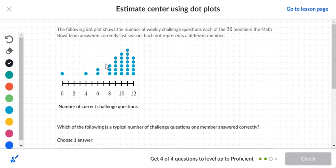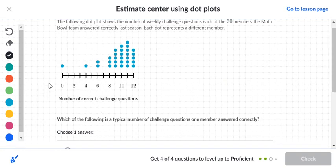Okay, next one. The following dot plot shows the number of weekly challenge questions each of the thirty members of the Math Bowl team answers correctly last season. Each dot represents a different member. Right here we're going from zero to twelve. So we got one, two, three, four, five, six, seven, eight.